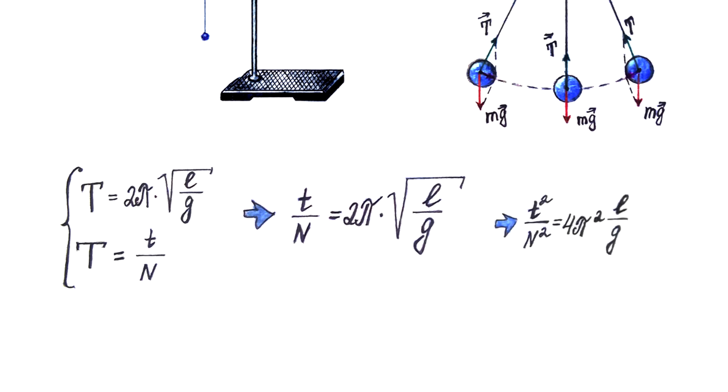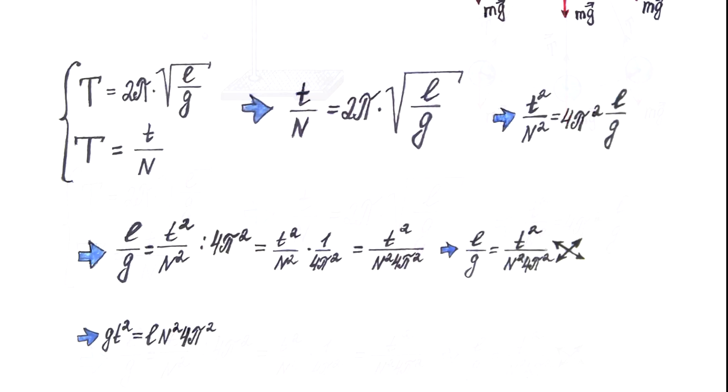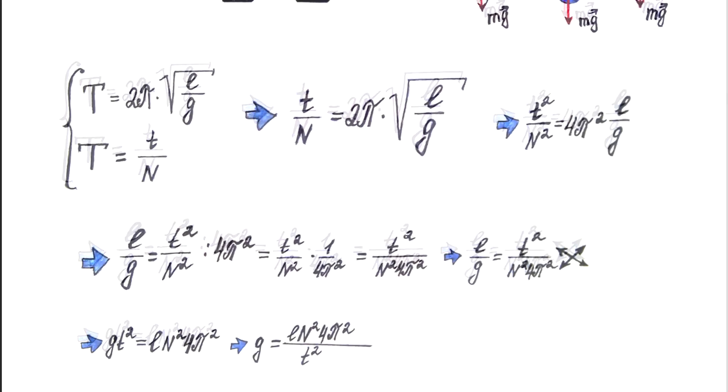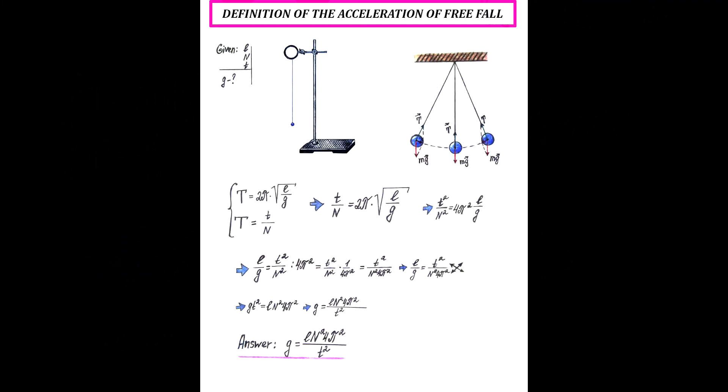Next, by simple mathematical transformation, we must express the acceleration of free fall. It's not difficult to get the proportion and express the acceleration of free fall. If you did everything correctly, then you will get this formula for determining the acceleration of free fall.